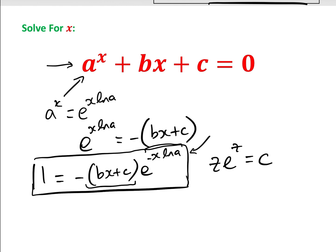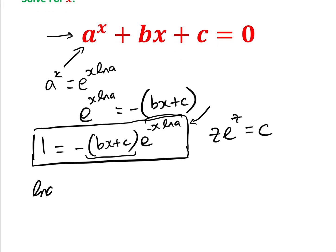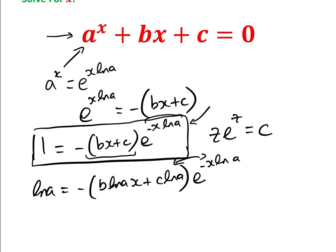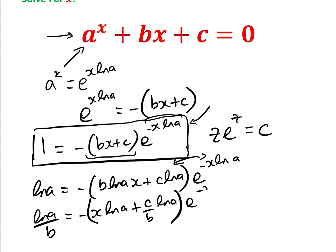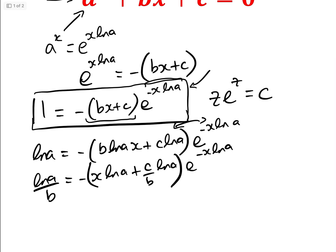We need to get things in terms of e to the minus x log a. So let's multiply everything by log a: we get log a equals minus b log a times x plus c log a times e to the minus x log a. Now dividing by b, we get log a over b equals minus x log a plus c over b times log a times e to the minus x log a.